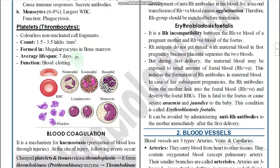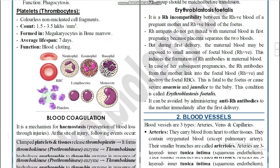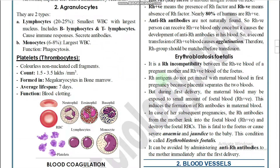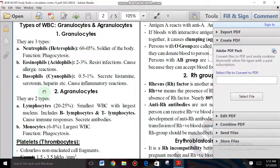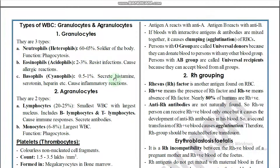Platelets majorly participate in the blood coagulation process. The diagrams show neutrophils with three lobes, eosinophils, basophils, lymphocytes, monocytes, blood platelets, and RBCs.